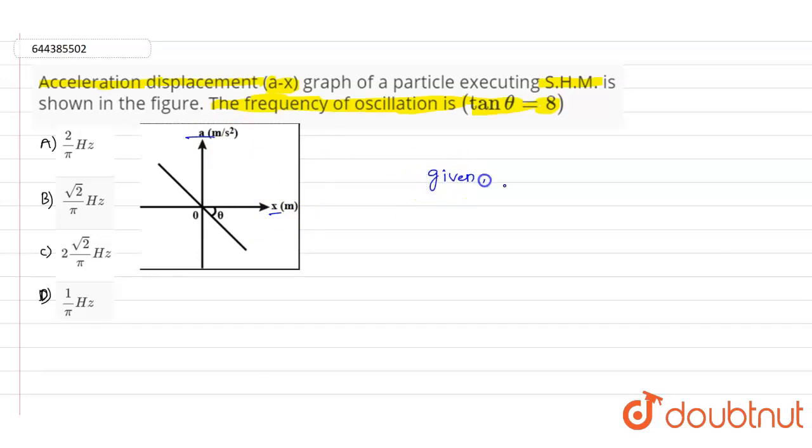Given the data that tan theta equals 8, where theta is the angle here. In simple harmonic motion (SHM), acceleration value a can be written as minus omega squared into x, where omega is the angular frequency and x is the distance.